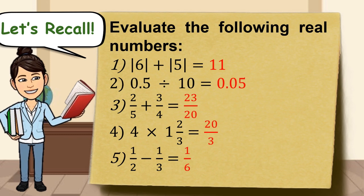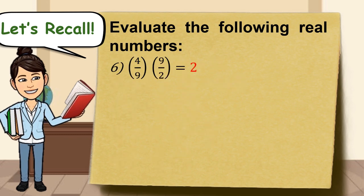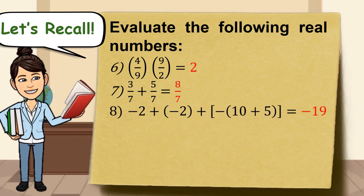Number 6, 4 over 9 times 9 over 2 is equal to 2. Number 7, 3 over 7 plus 5 over 7 is equal to 8 over 7. Number 8, negative 2 plus negative 2 plus the quantity of negative times the sum of 10 and 5 is equal to negative 19.